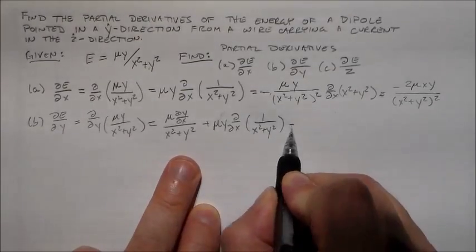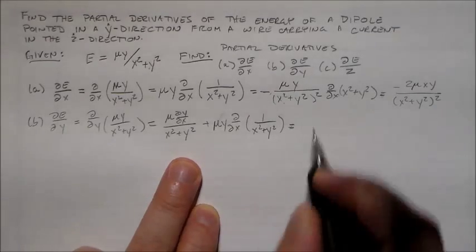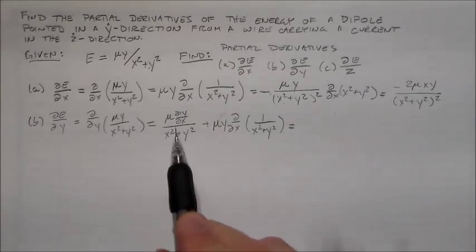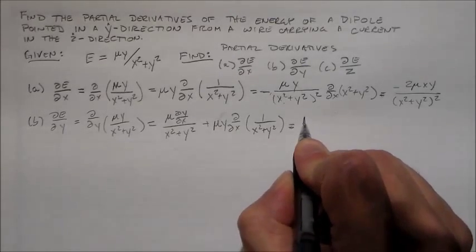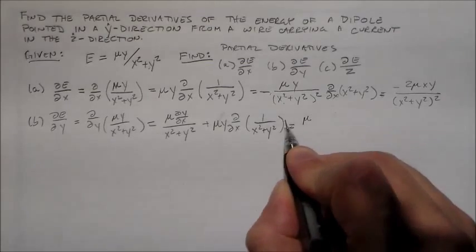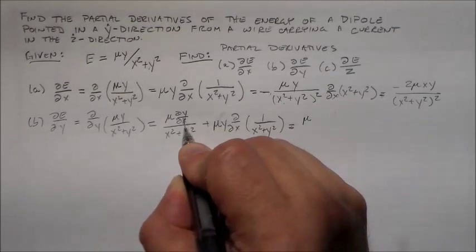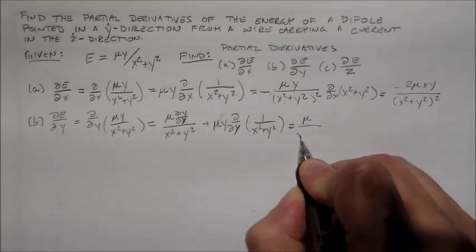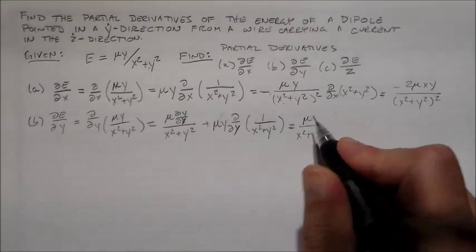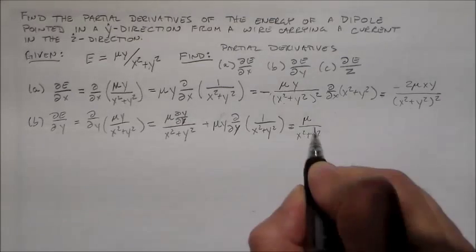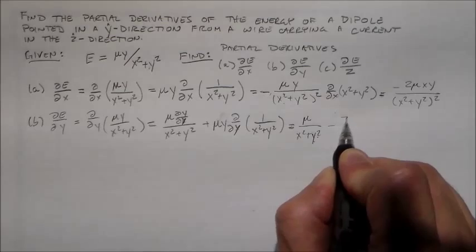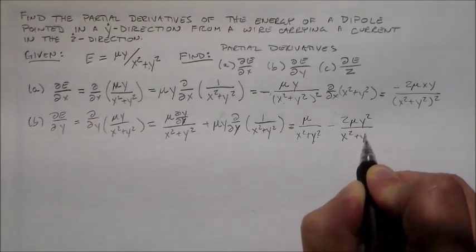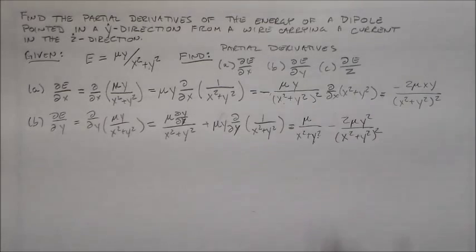So you get those two things equal like that. This guy is simple enough. We have μ, this is dy excuse me. We have μ over x squared plus y squared. And we have something similar to what we've got over here. We have minus 2μy squared over x squared plus y squared squared.